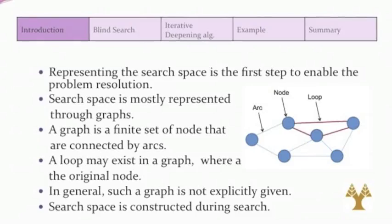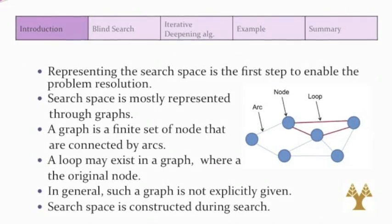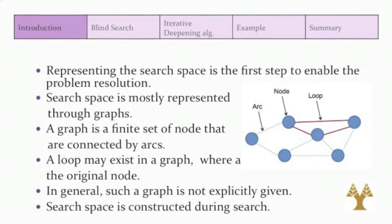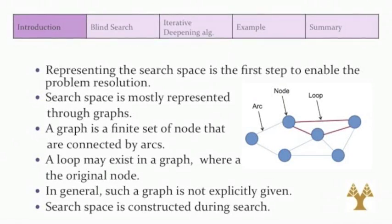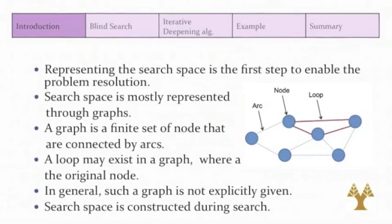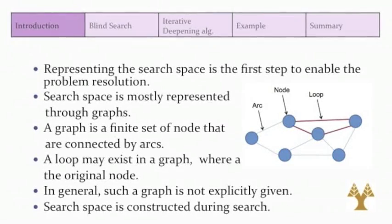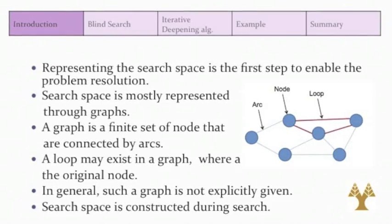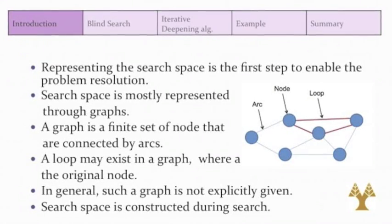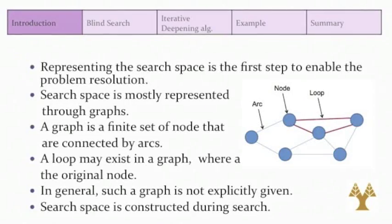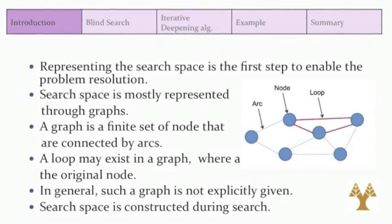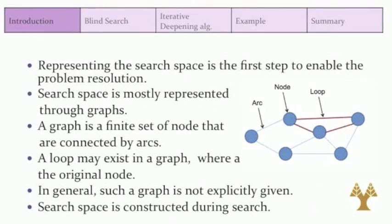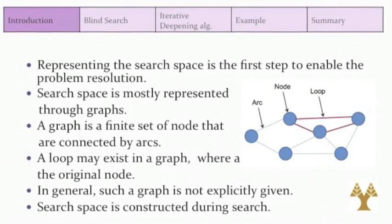It's important to understand the search space representation, because representing the search space is the first step to enable problem resolution, and it's mostly represented through graphs. A graph is a finite set of nodes connected by arcs. In the picture we can see arcs, nodes, and a loop with red arcs. A loop exists where an arc leads back to the original node. Search space is constructed during search.